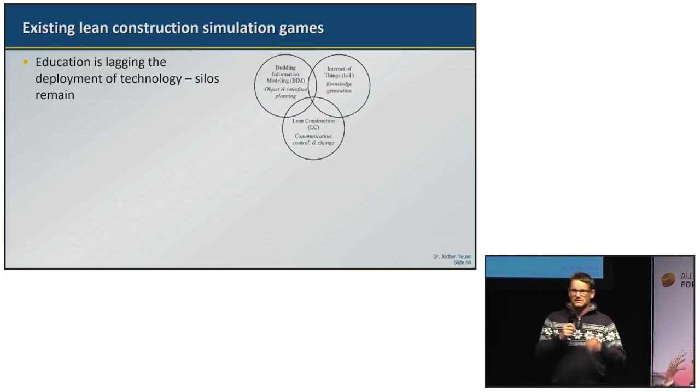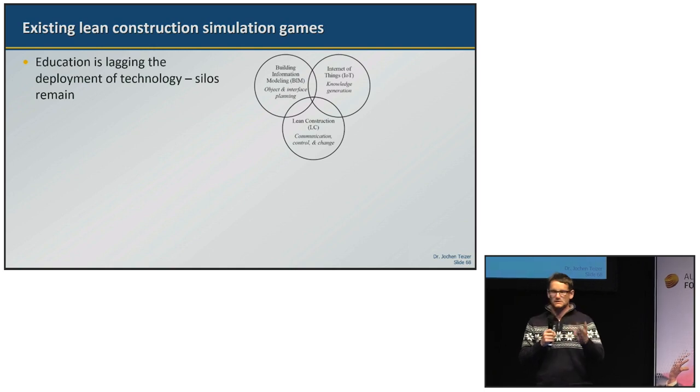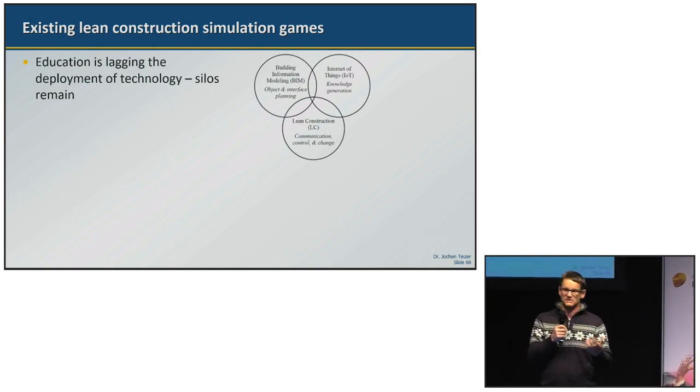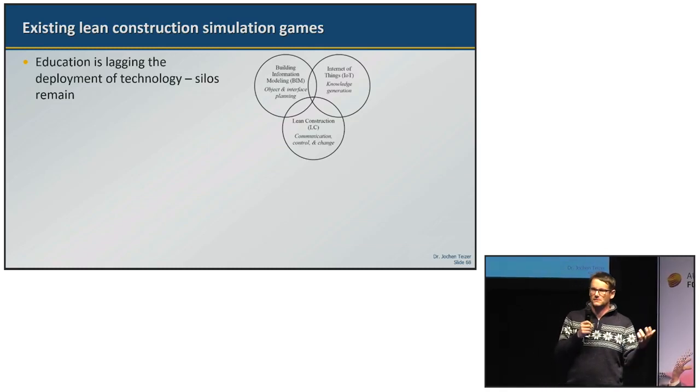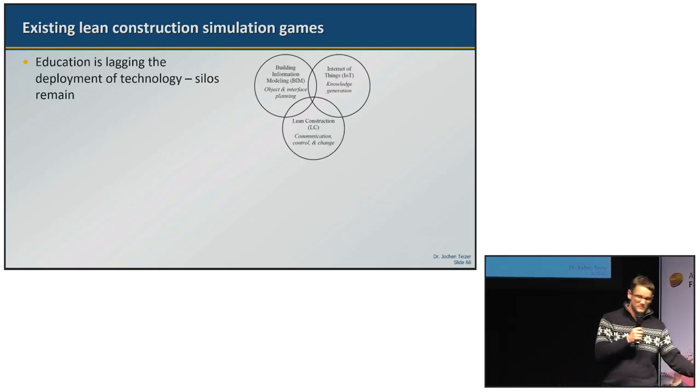So we have silos that exist in BIM, IoT and lean construction. These things haven't been well tied together. If you go on construction sites, who's using mobile field devices, wearables? Very, very, very few companies, if you look around, at least here in Germany. Ask yourself, why? Why is this happening?